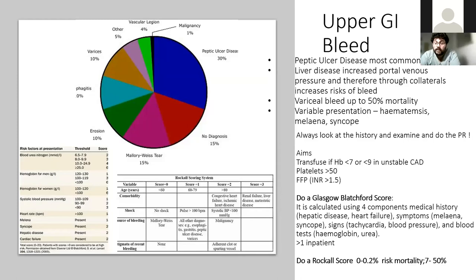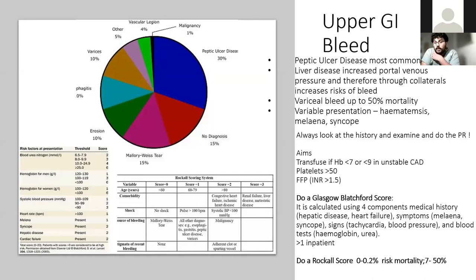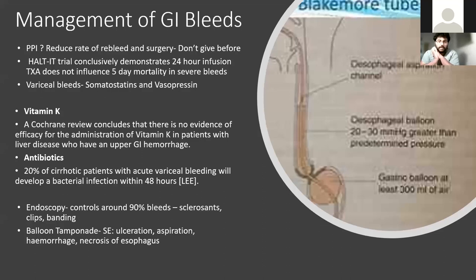You want to reverse the coagulopathy these patients have from liver disease — give FFP and vitamin K. Before endoscopy, use scoring systems: the Rockall score and Glasgow-Blatchford score assess risk of rebleed and mortality. The Blatchford score determines whether endoscopy is needed — if you score over 1, you'll need it. The Rockall score is very important for risk stratification and long-term outcome. PPIs really should be given after the endoscopic procedure, not before.